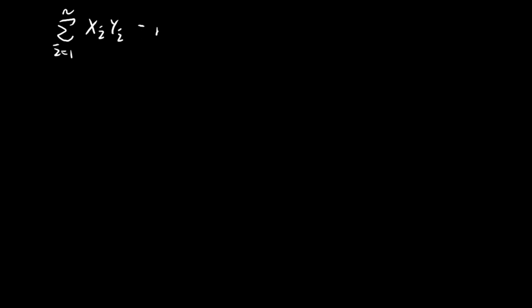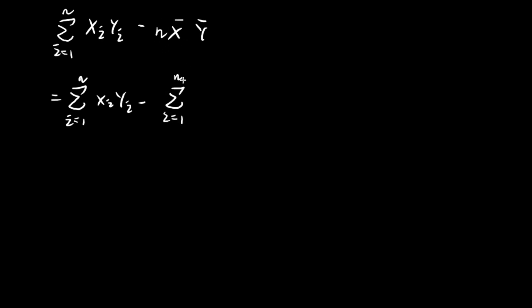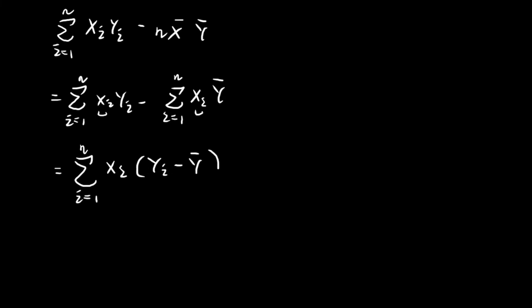The numerator is the sum of xi times yi minus n times the sample means. I'm going to rearrange some of these terms. Instead of writing out the sample mean of x, I'll re-express it back as a sum — the sum of xi times the sample mean of y. Then I can combine both summation signs, since both have xi, to get the sum of xi times (yi minus the sample mean of y).